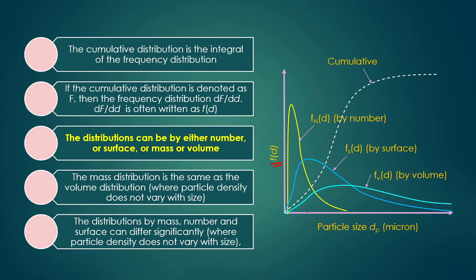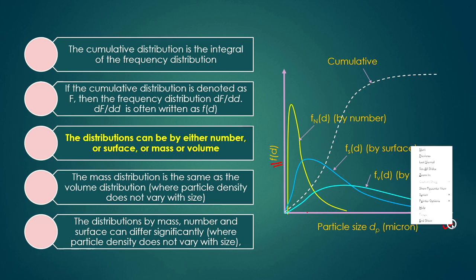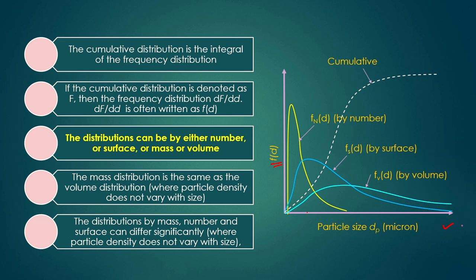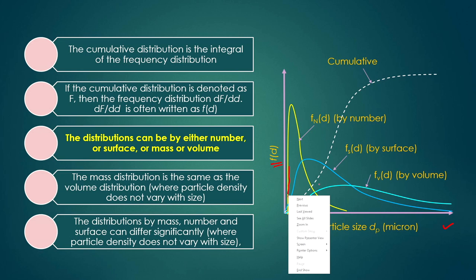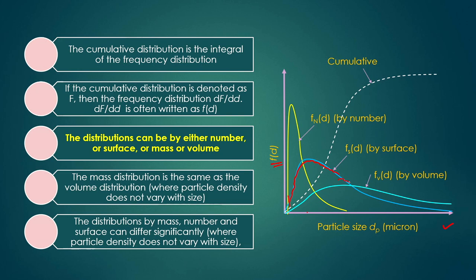Mass distribution is the same as volume distribution where particle density does not vary with size. The distribution by mass, number, and surface can differ significantly. As shown in this figure, the number distribution, surface distribution, and mass/volume distribution are all different curves. Surface area can be calculated as π·dₚ² for a spherical particle (or 4πr²), and if there are n particles, then n times the surface area of each particle gives the total surface area for that class.